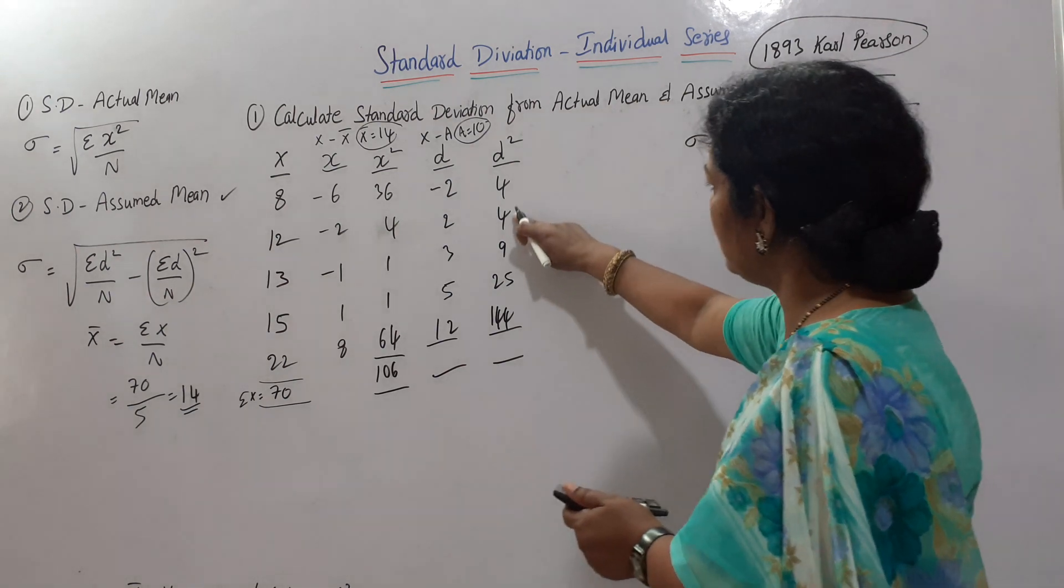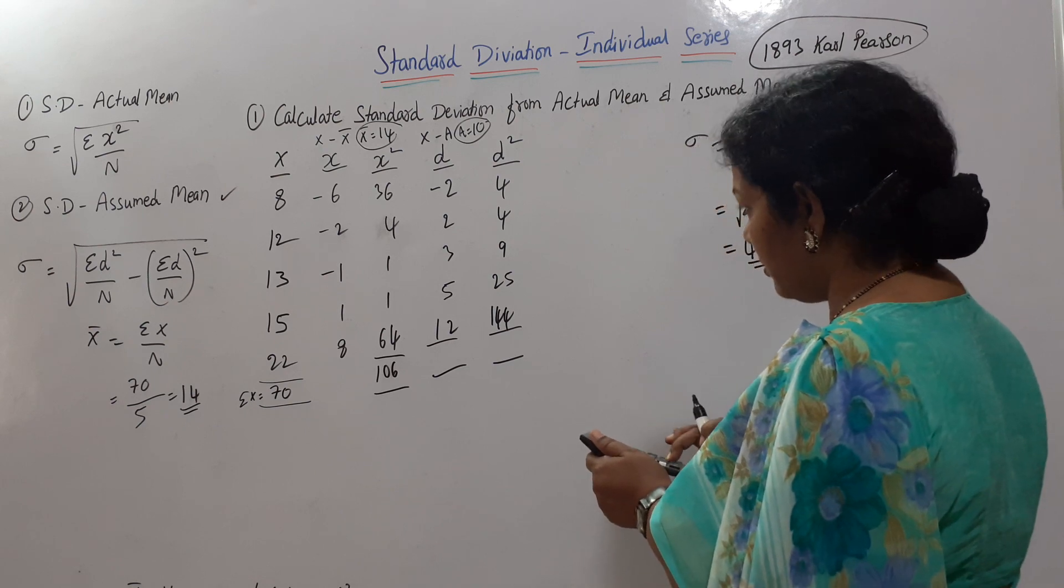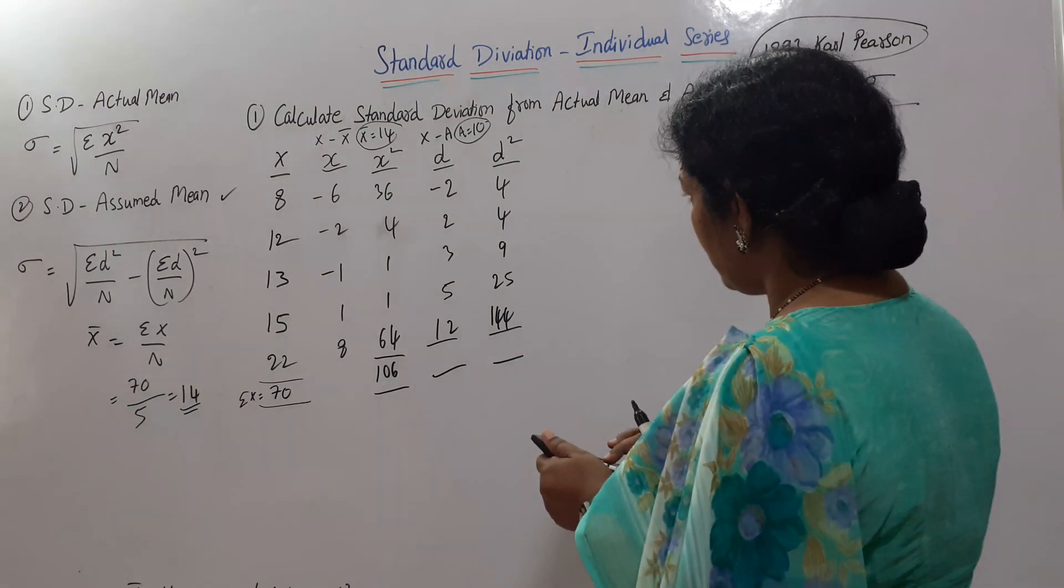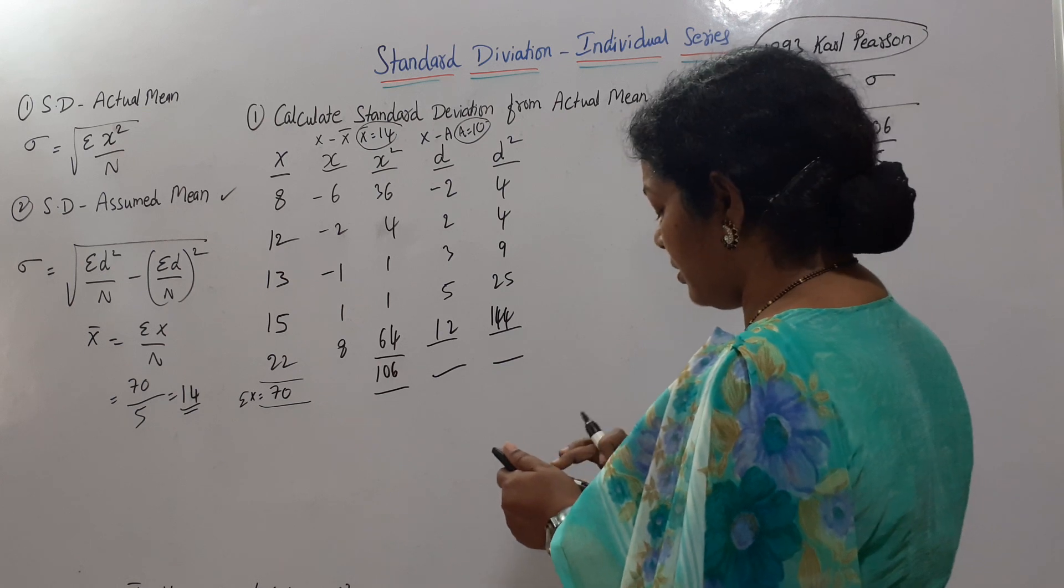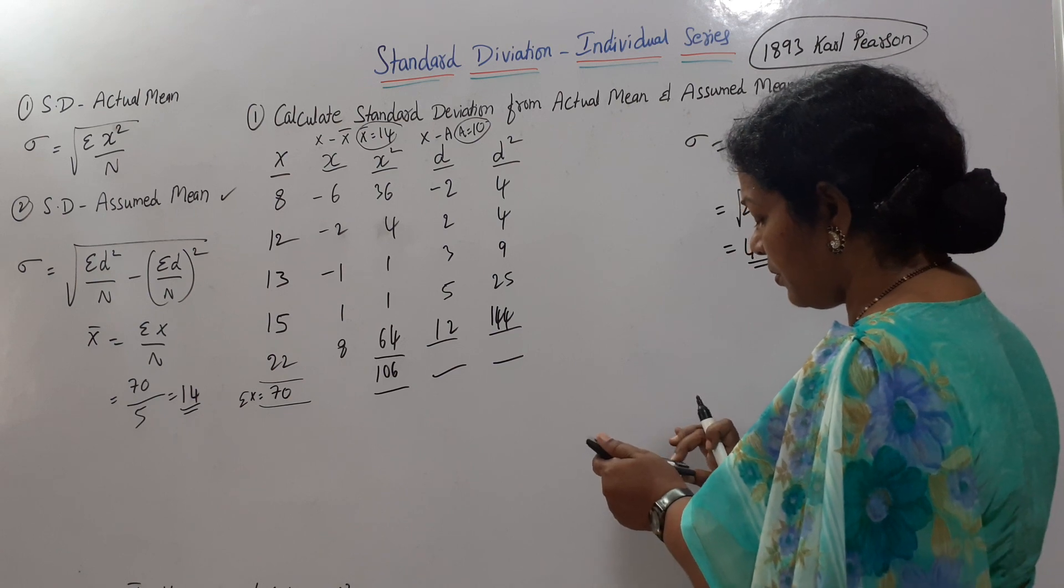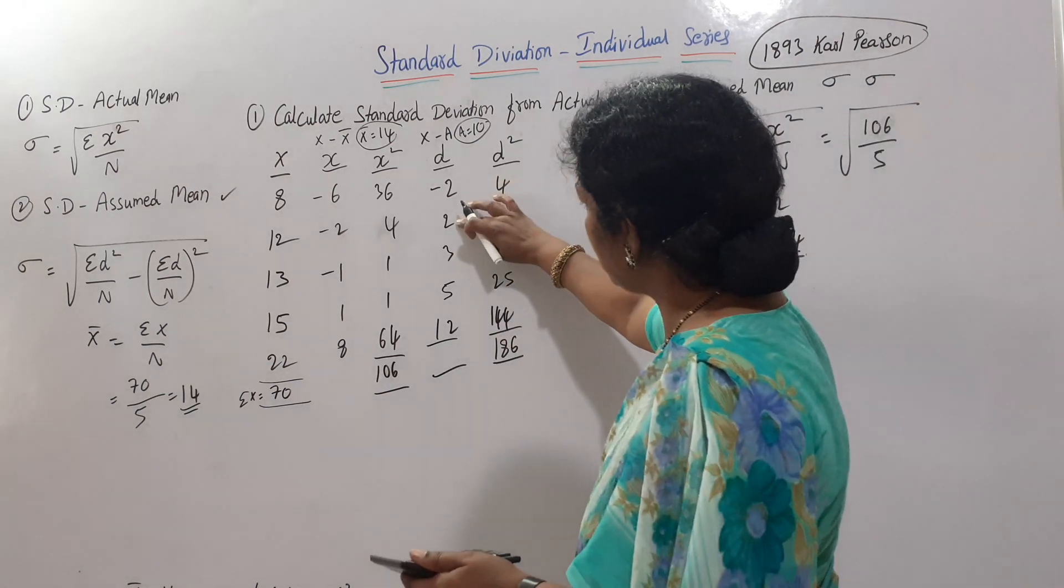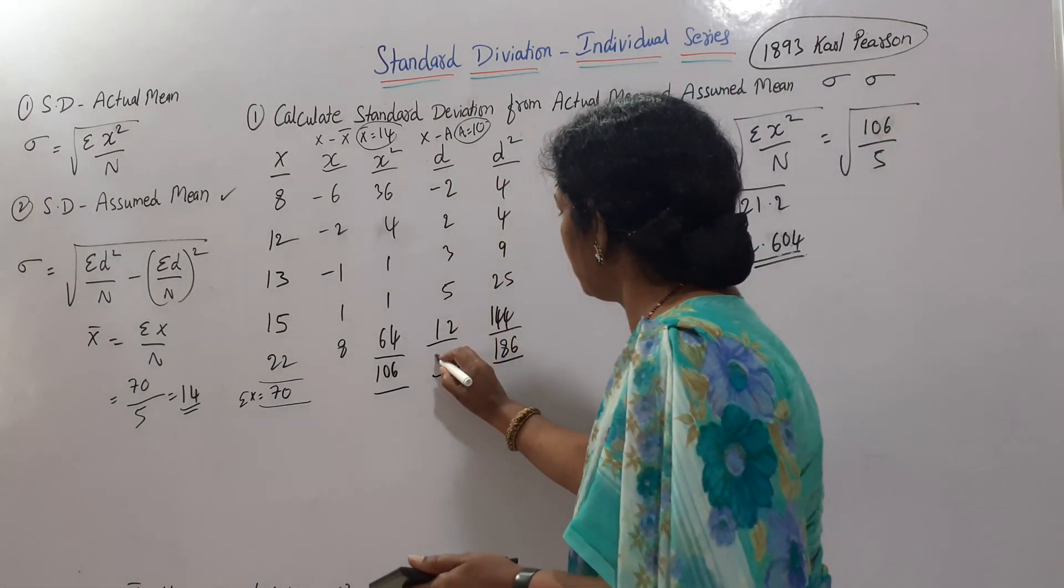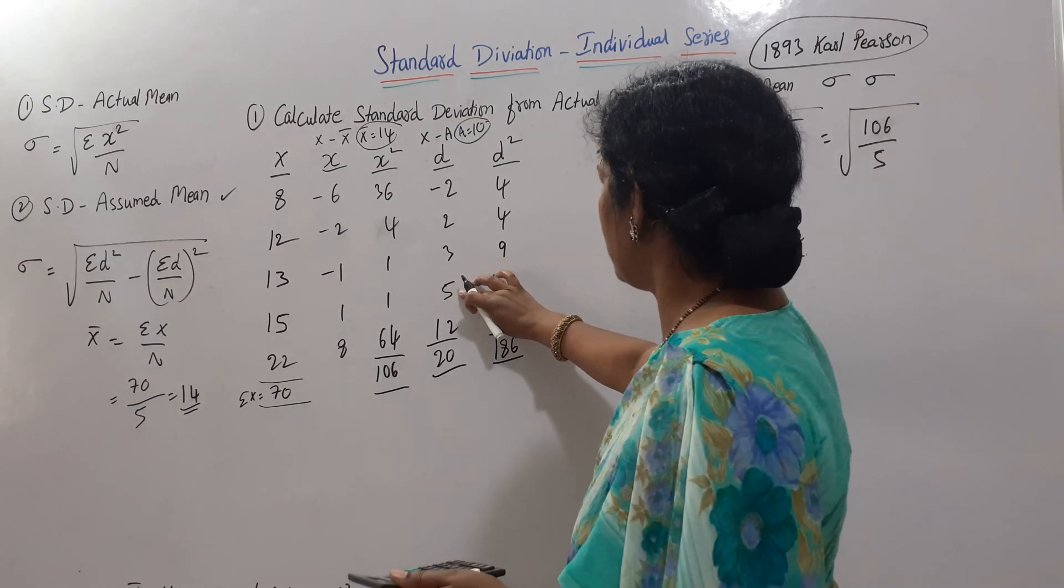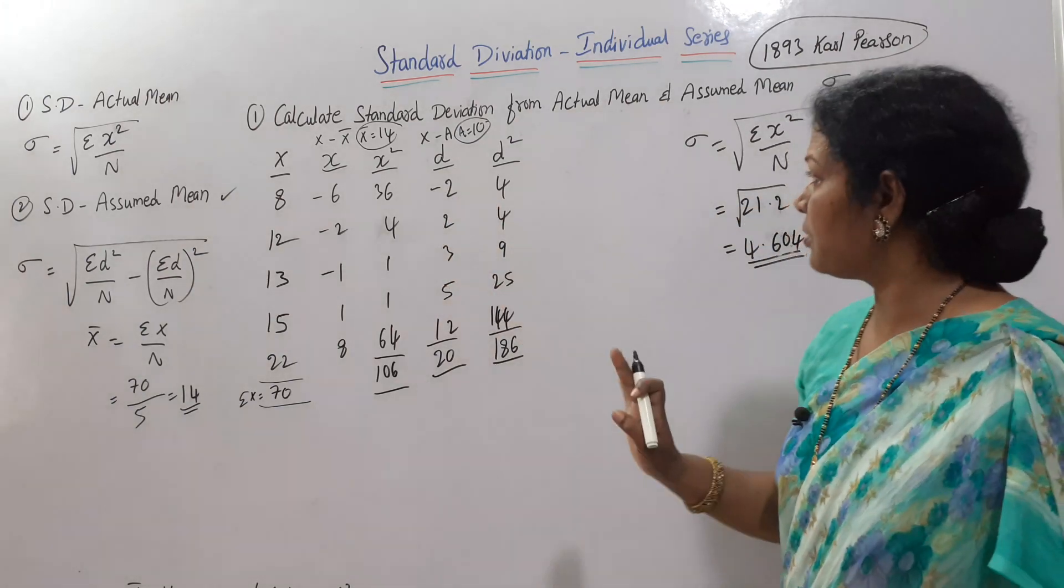Let's total both. 4 + 9 + 25 + 144 = 186 for d square. For d, the negatives cancel out, so 12 + 5 + 2 + 2 = 20. Minus if we deduct it, so this total is already gone, leaving 20.